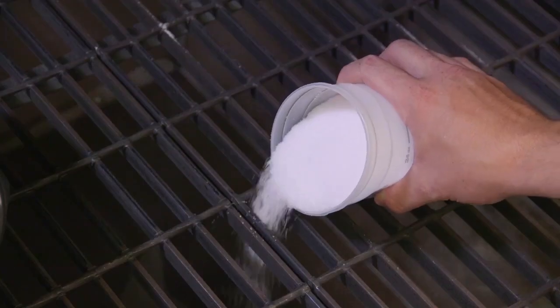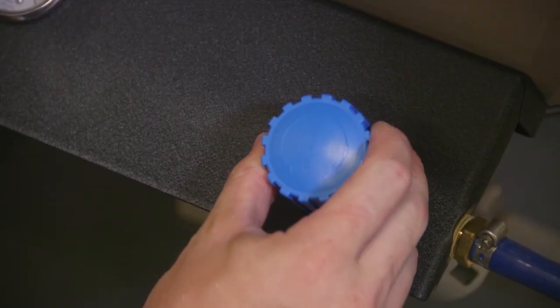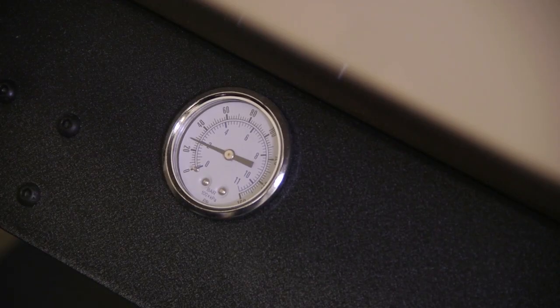Next, prepare the media blaster. Load the desired blasting media and adjust the pressure. Start with a low pressure and gradually increase until it provides the desired results. Do not exceed 207 kPa as higher pressures will produce divots in the part surface and cause the media to break down.